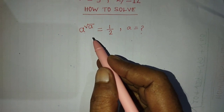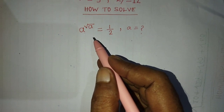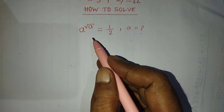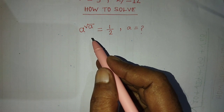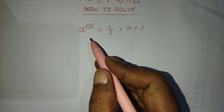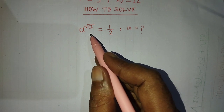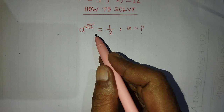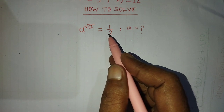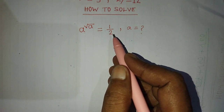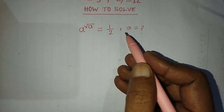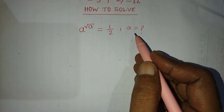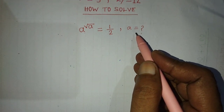Hi guys, welcome back to my channel, Alim Maths Blogs. Today our question is: if a to the power root over of a is equal to 1 over 2, then find the value of a.